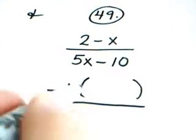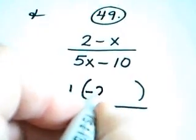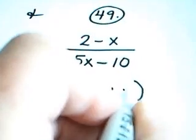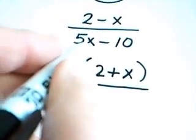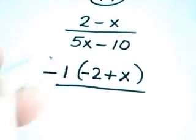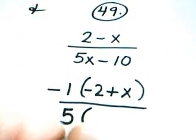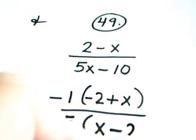When I factor out a negative 1, I have negative 2 plus x. In the denominator, my lead term is a 5x, I factor out a 5 and in parens I have x minus 2.